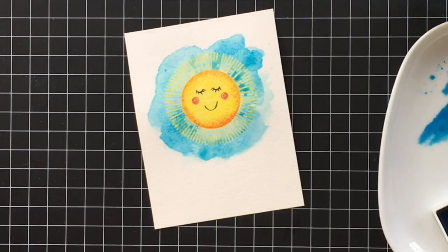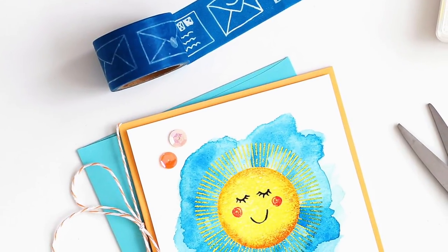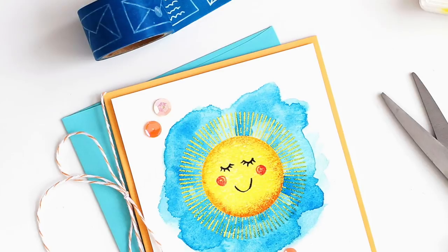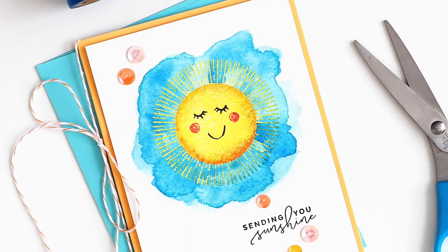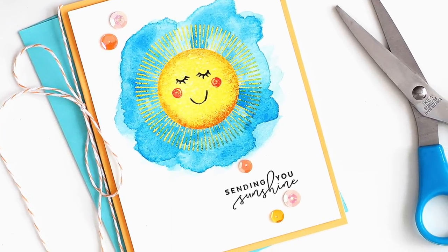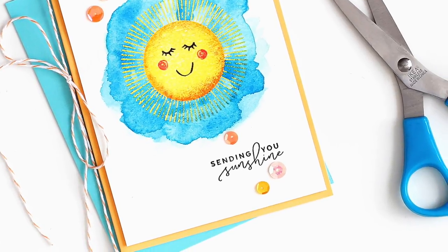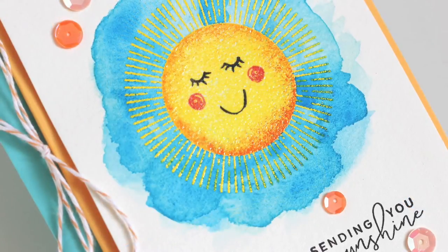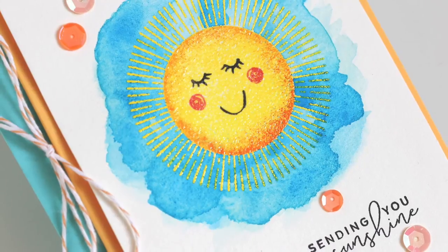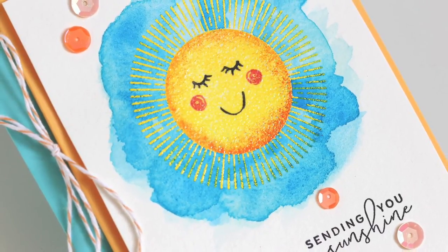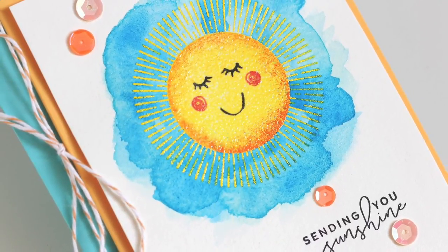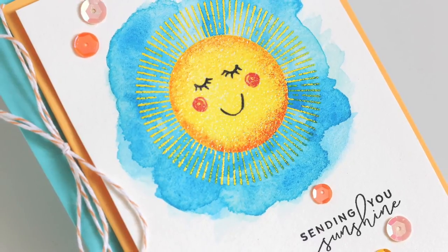I went ahead and finished up the card. I just added some sequins here and there and then stamped the 'sending you sunshine' sentiment that's also in the set. Here's a close-up so that you can see the sun better with the embossing. Thanks so much for joining me and I hope you give these techniques a try.